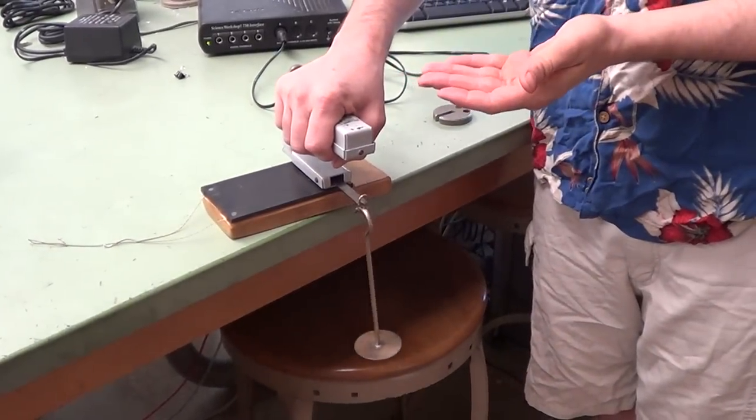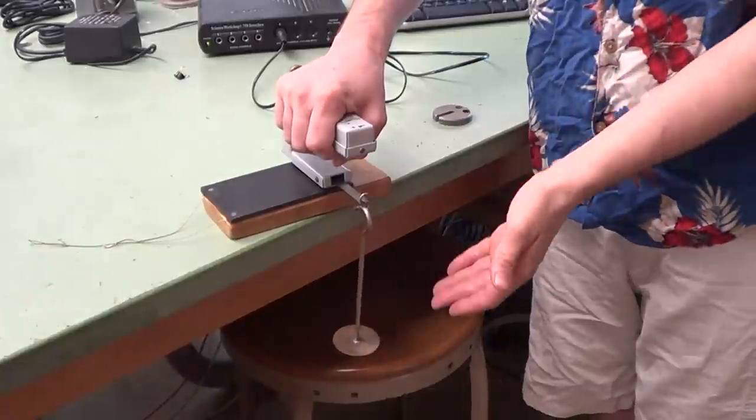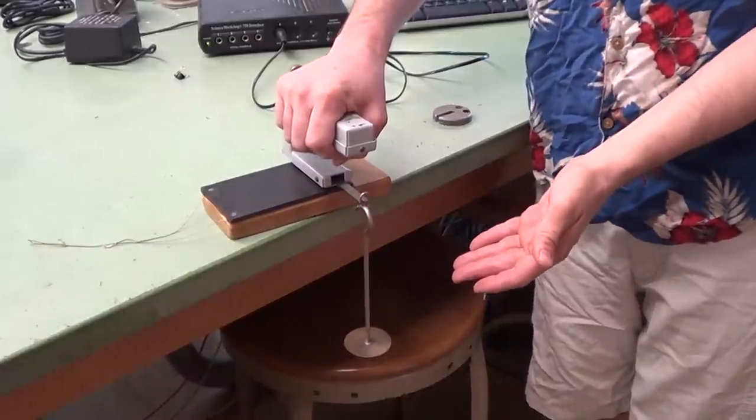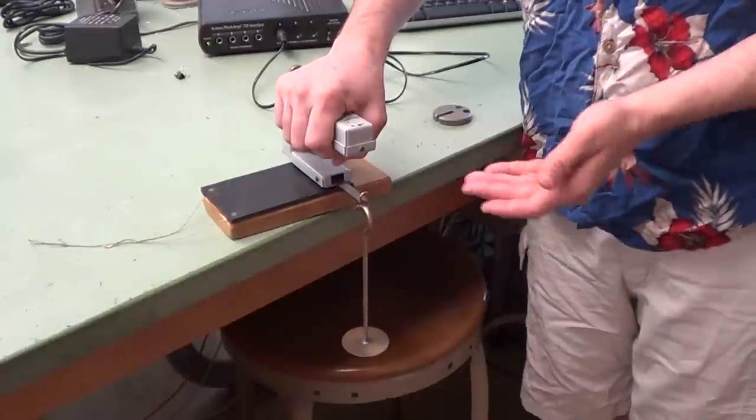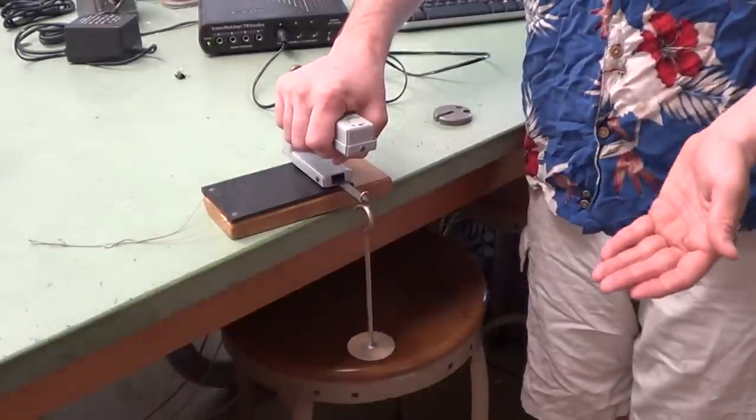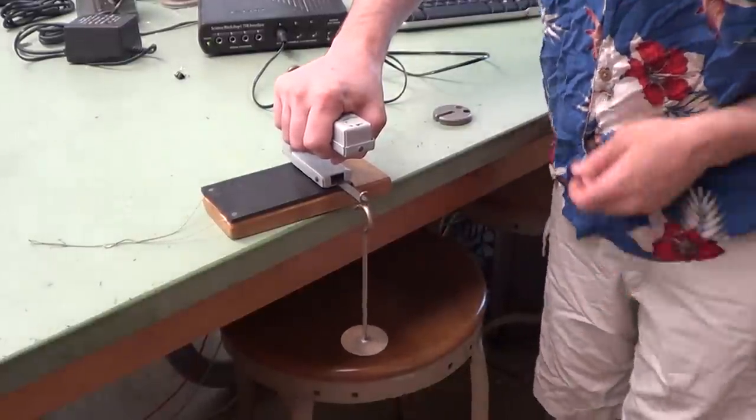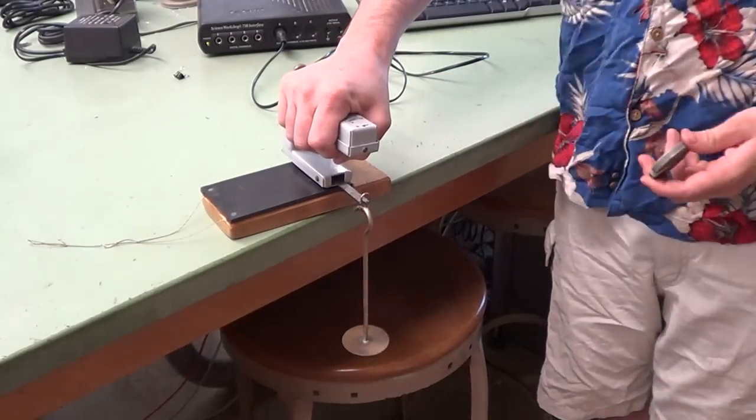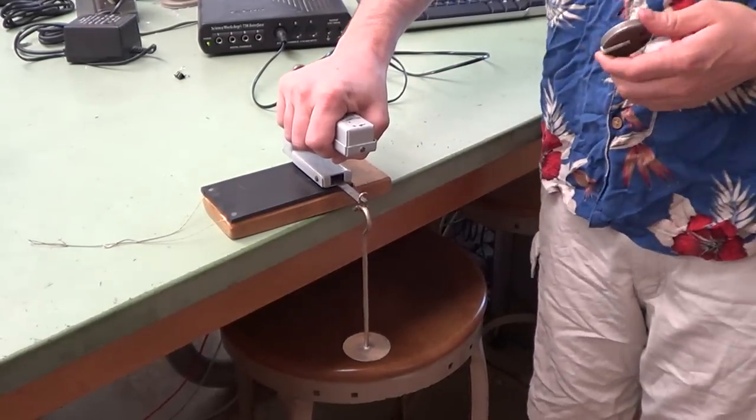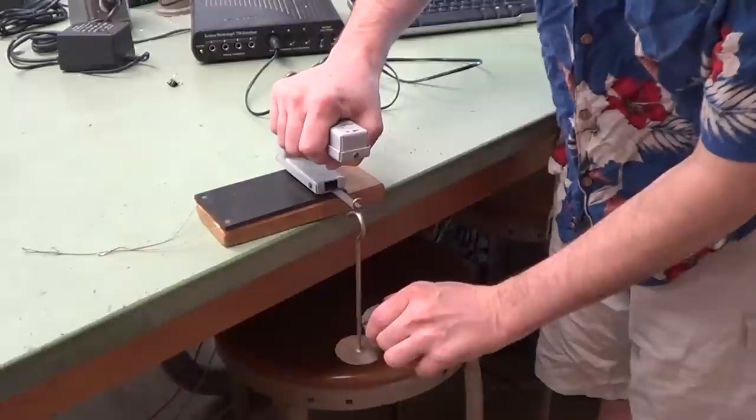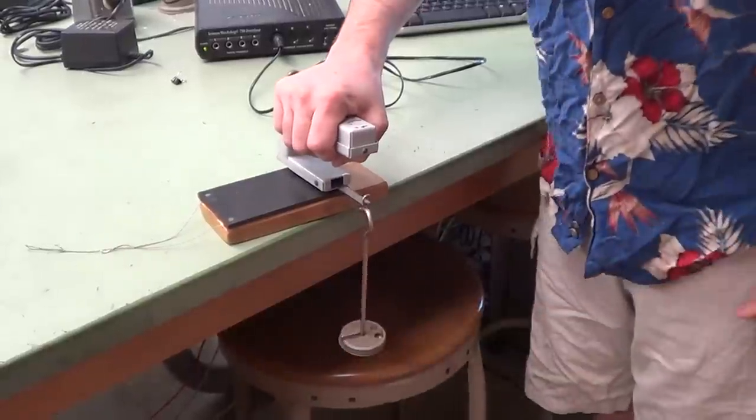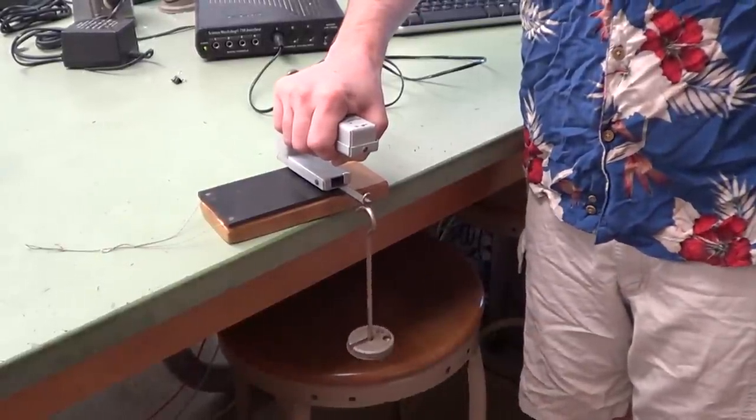Essentially, this device converts forces to voltages. We have to put 50 grams worth of mass on here to get the requisite voltage. 50 grams is 0.49 newtons. Once we've set that point in Data Studio, which will be shown later, we then add a second heavier mass and do the same thing for the second data point.